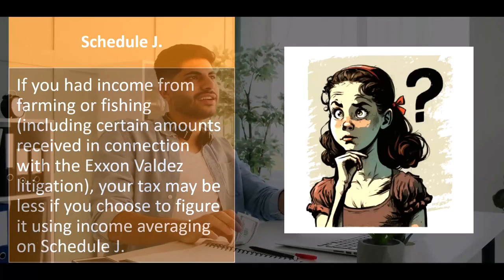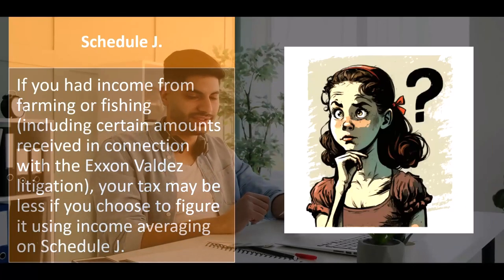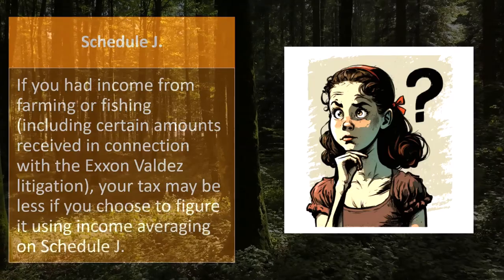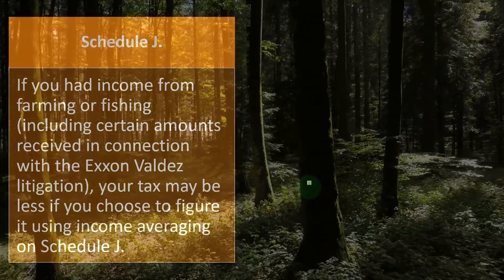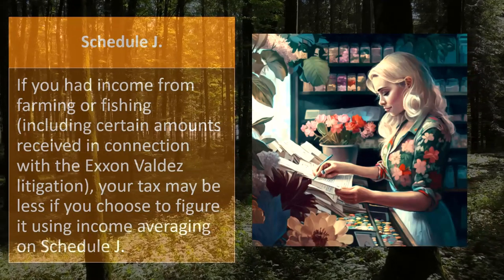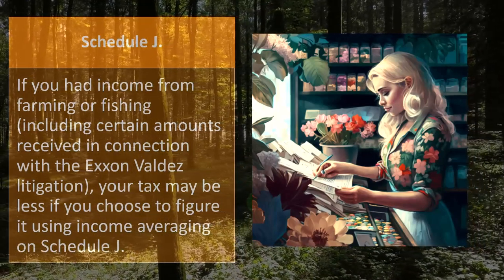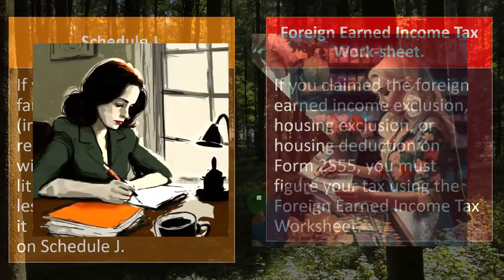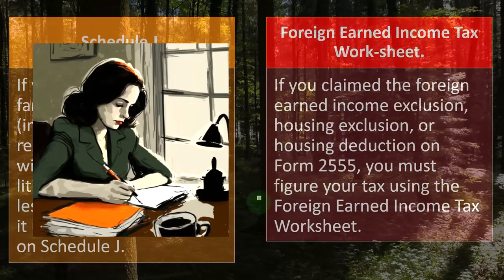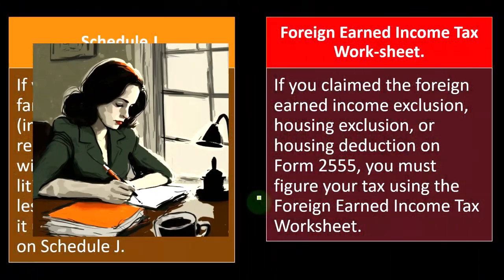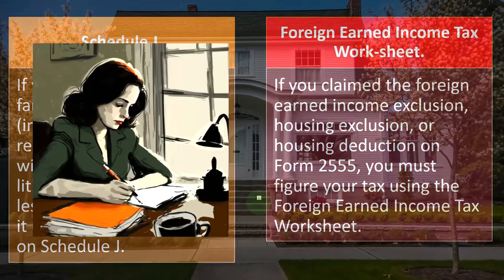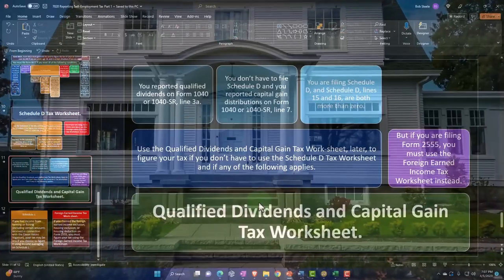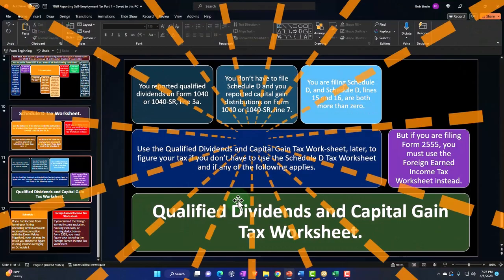Schedule J: if you had income from farming or fishing — a special industry — your tax may be less if you choose to figure it using income averaging on Schedule J, including certain amounts received in connection with the Exxon Valdez litigation. If you claim the foreign earned income exclusion, housing exclusion, or housing deduction on Form 2555, you must figure your tax using the foreign earned income tax worksheet.